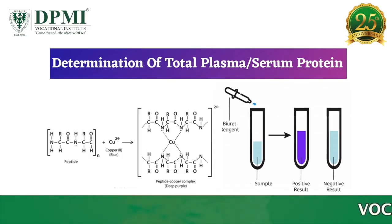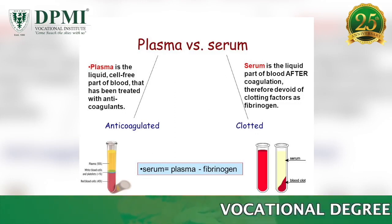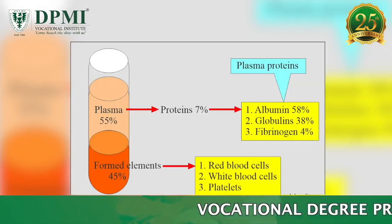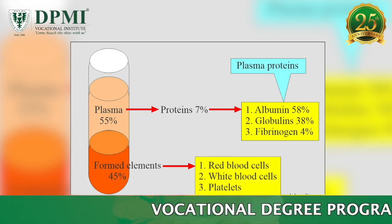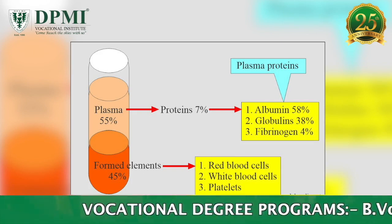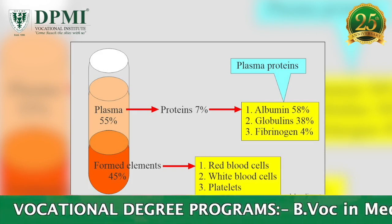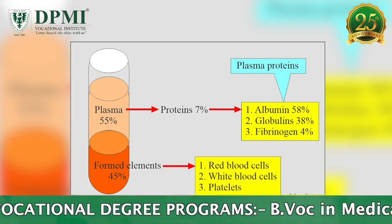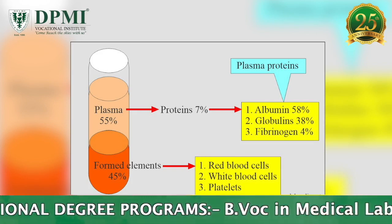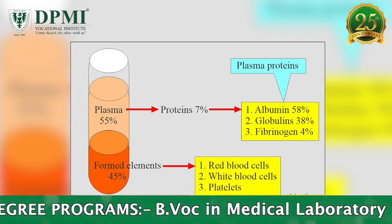Determination of Total Serum or Plasma Protein — Introduction. About 7 to 8 percent of plasma contains proteins, which are called plasma or serum proteins, and these comprise the major part of the solids of the plasma.